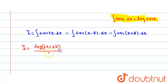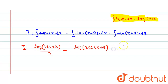We know that the integration of tan(2x) is log|sec(2x)| upon 2, minus the integration of tan(x − θ) is log|sec(x − θ)|, minus the integration of tan(x + θ) is log|sec(x + θ)|, plus integration constant c.